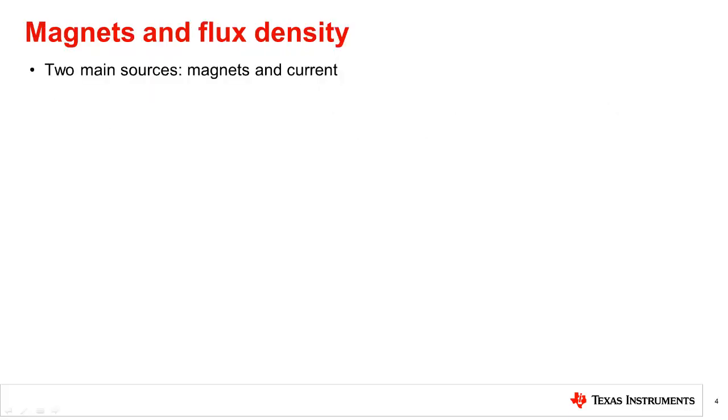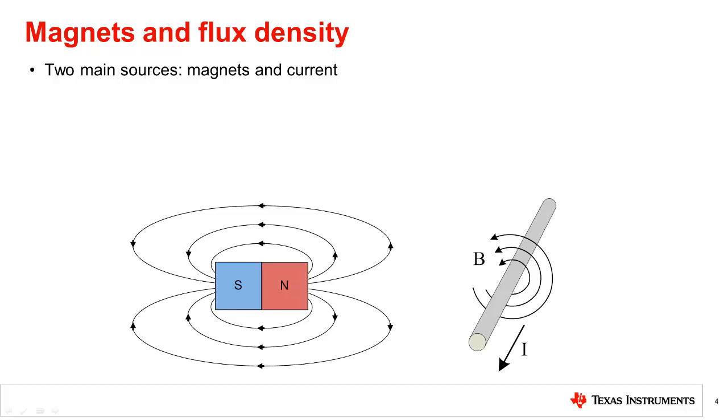There are two main sources that generate magnetic force fields, magnets and current. Magnetic flux refers to the total sum of magnetic field lines passing through a specified area. For example, the region shown in green has some amount of magnetic field passing through it. The unit for this is Weber or Maxwell.